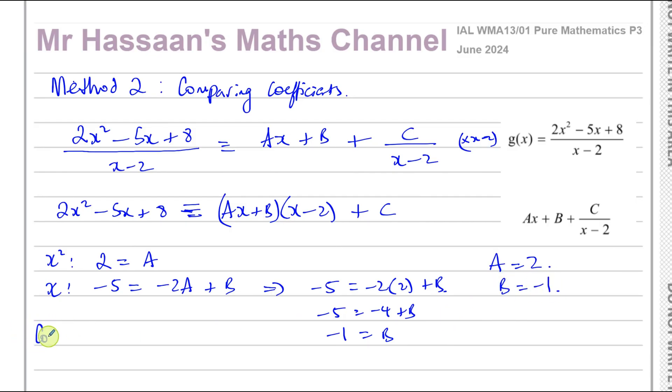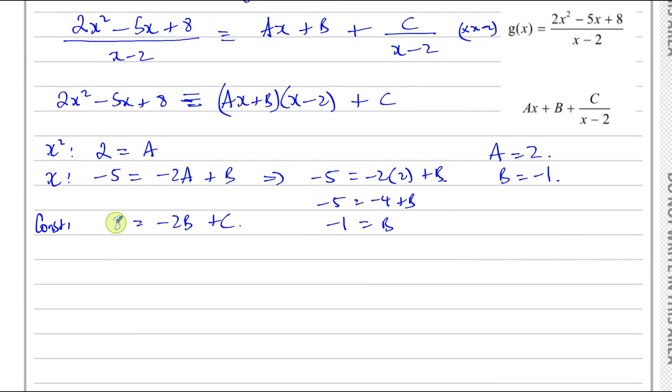And then we can compare the constants on both sides. Here we have 8. The constant from this bracket when you expand it will be minus 2 times B, so minus 2B. And then you've got the constant at the end plus C. So we can find C now because we know B is minus 1. So we can say that 8 is equal to minus 2 times minus 1 plus C. So 8 is equal to 2 plus C. So C is equal to 6.